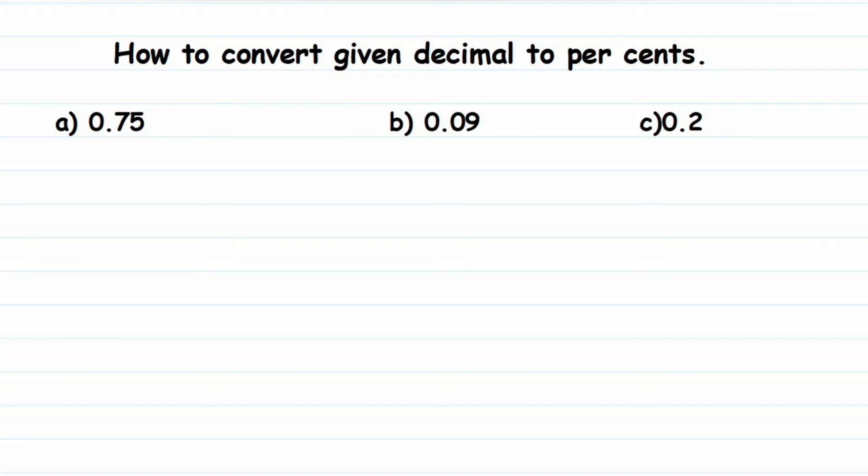Hi everyone, here we're going to do how to convert a given decimal into a percent. Whenever a decimal number is given to you, how do you convert that into a percent? This rule is applicable for any decimal number. We have three different examples here: first one is 0.75, second is 0.09, and third is 0.2. Let's start converting them into a percent.